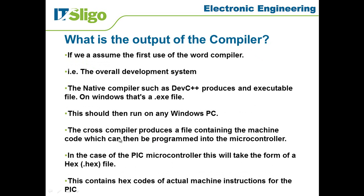Just to come to this final section: what is the output of the compiler? While I'm going to go down through this slide, I'm also going to show you the two different types of compiler so that you see the output from it. If we assume the first use of the word compiler, which is describing the compiler as the overall system—the overall development system—the native compiler such as DevC++ produces an executable file.